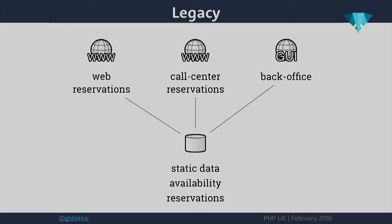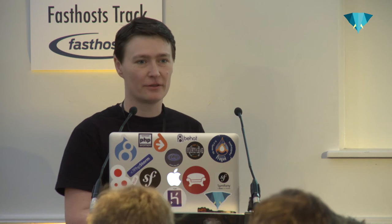I have a very brief schema representing the data flows in the legacy application. When we were tasked with this project, they had a back office interface where they were administering all the information, pushing it to the data layer. The only customers for this data were the web reservation portal and the call center application. This schema is only here to show the concepts — it's by no means a complete diagram of how the legacy application was looking when we were tasked to refactor it.